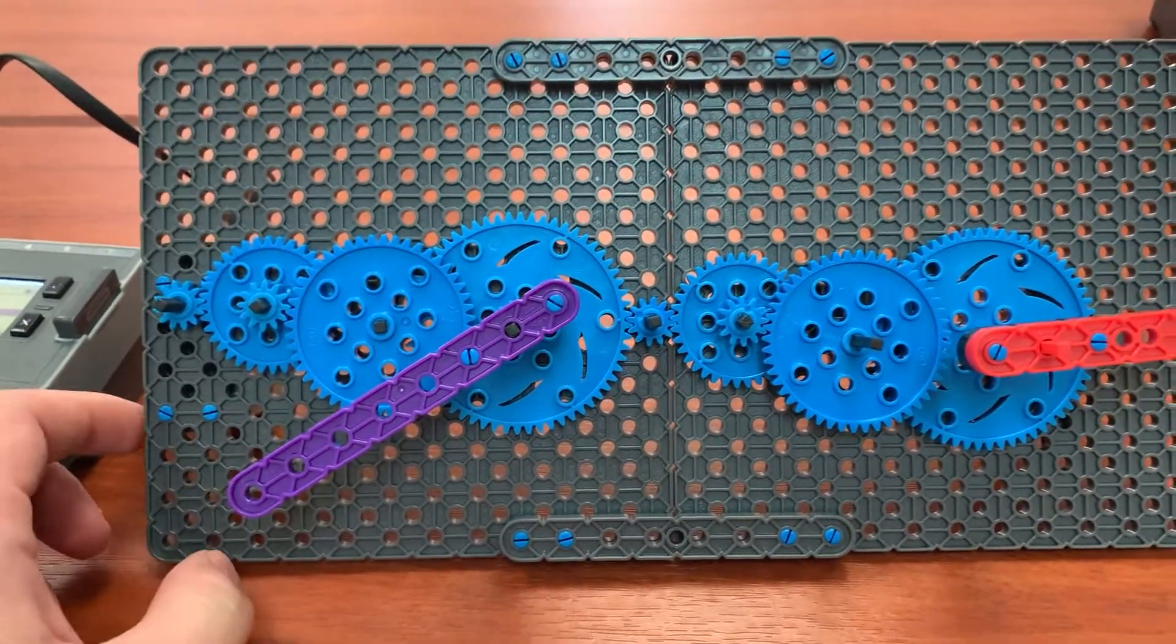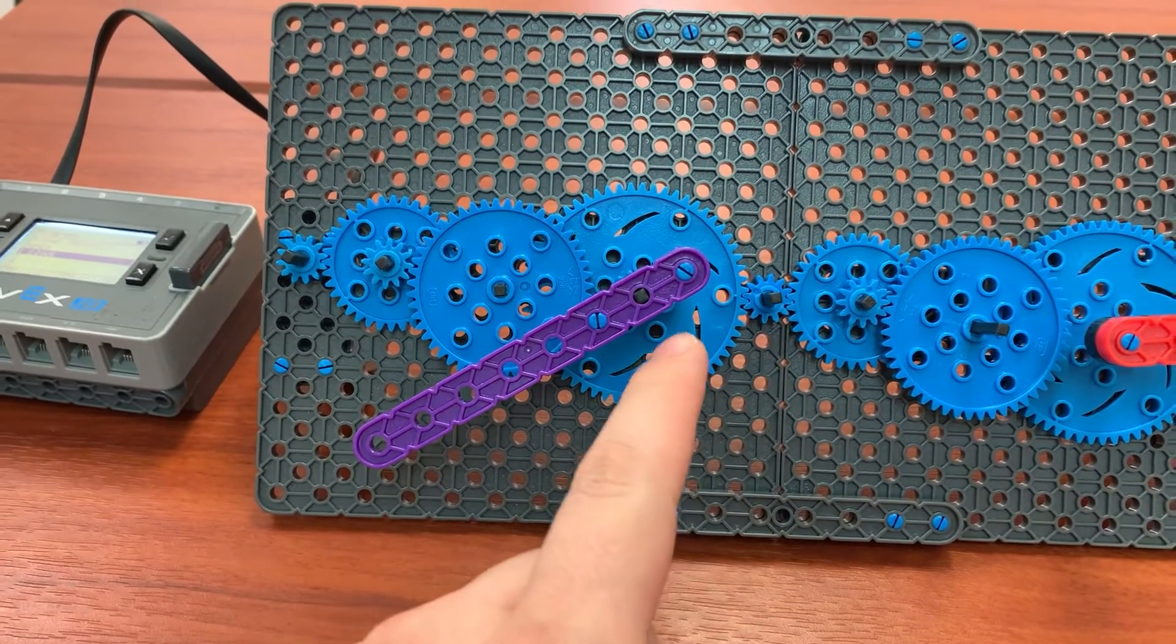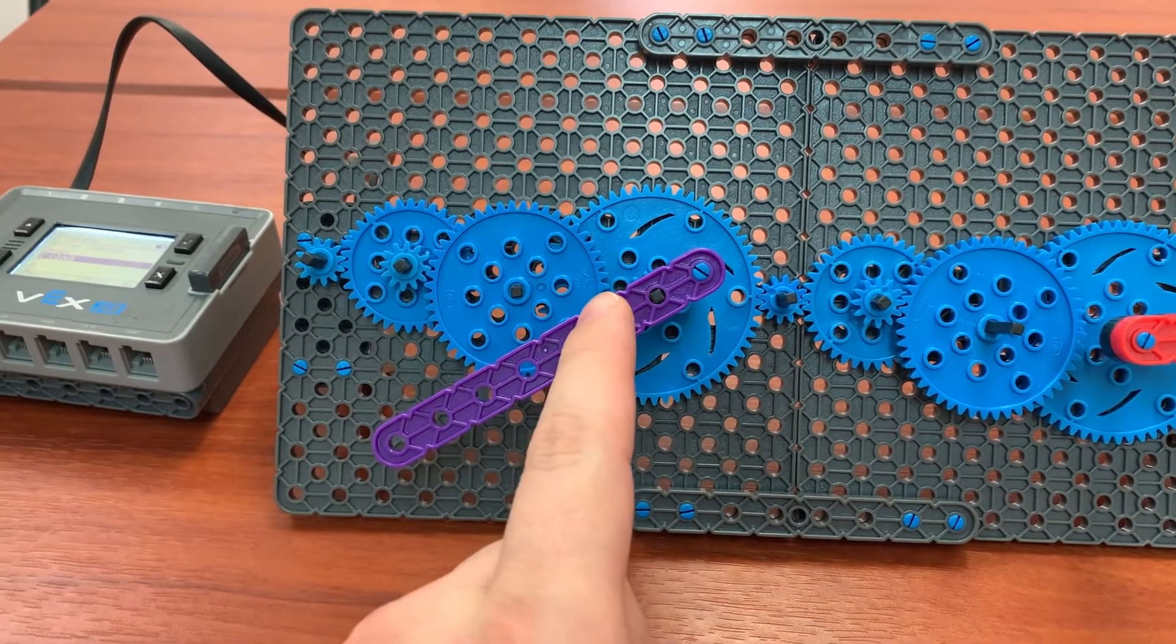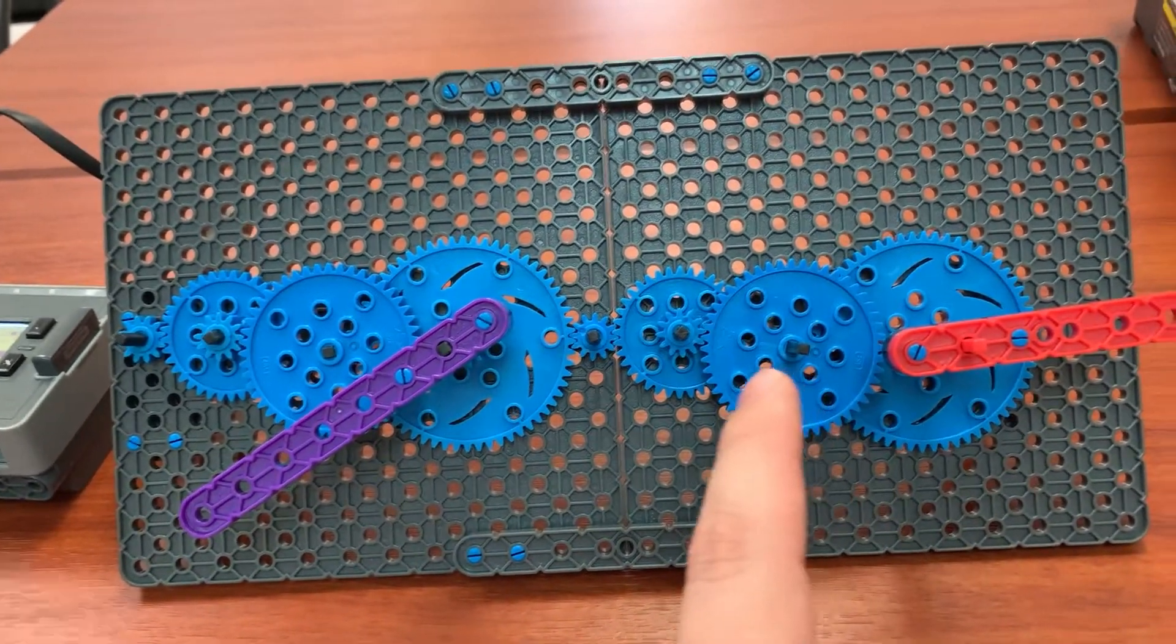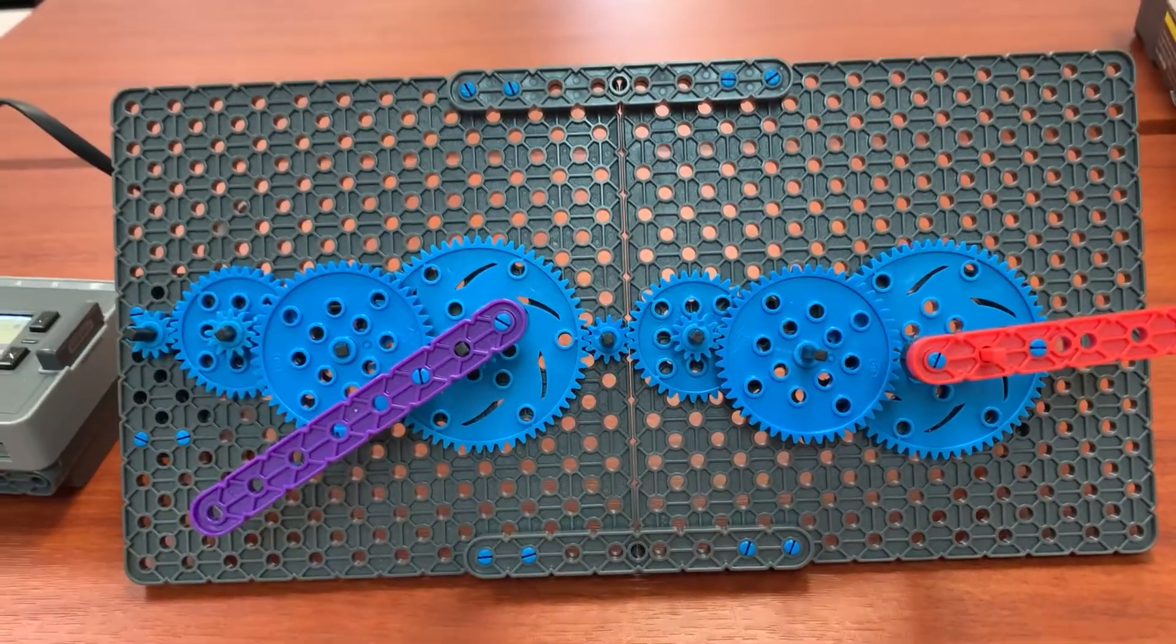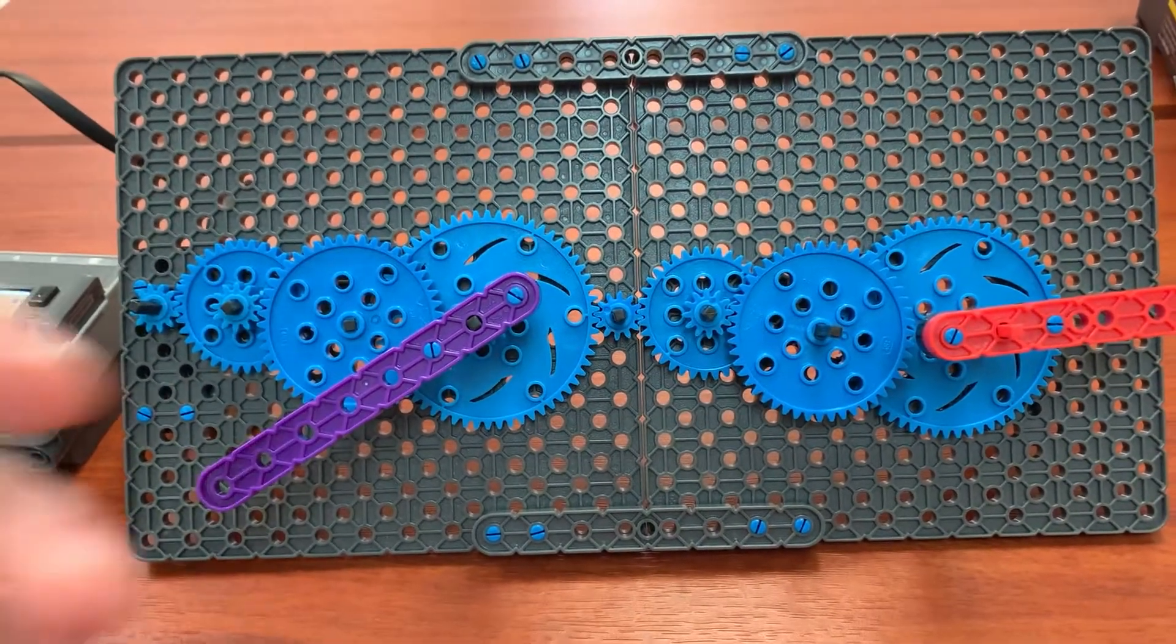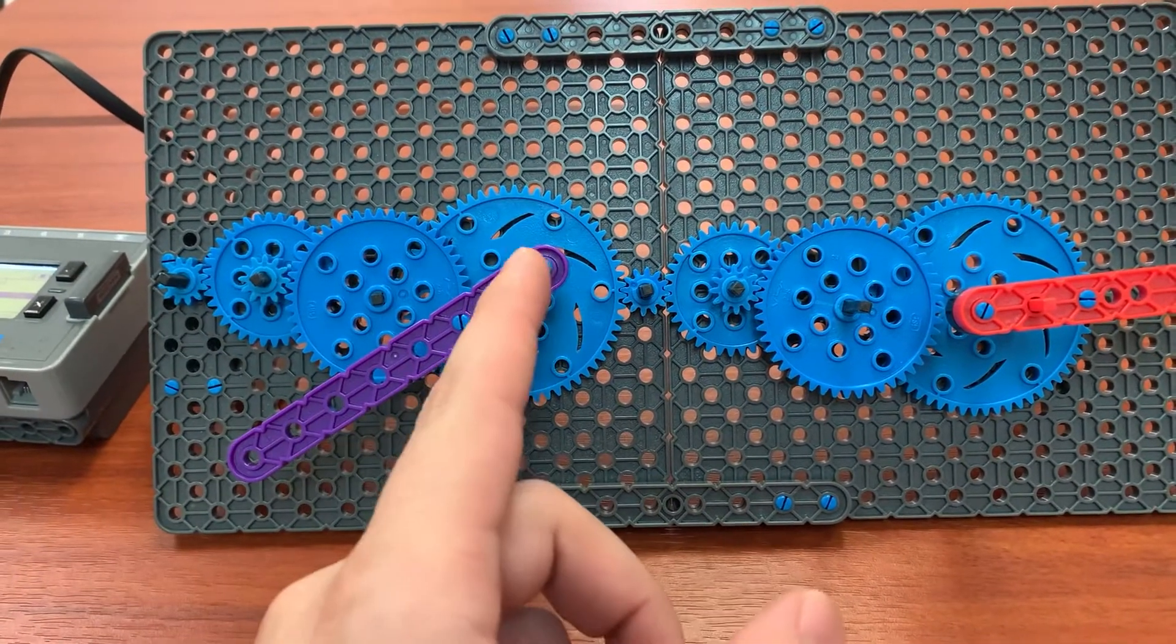So on the next day, another student who was going over compound gearing saw this clock that had been built and asked if he could build an hour hand onto it. And so we talked about how you would do that. And he, in his gut instinct was to just do this again, because this is a 60 to one gear ratio.